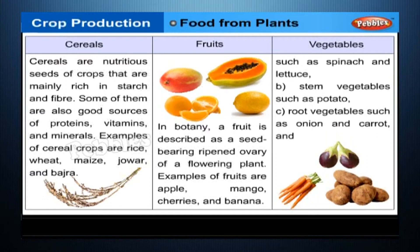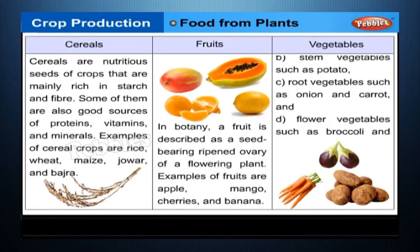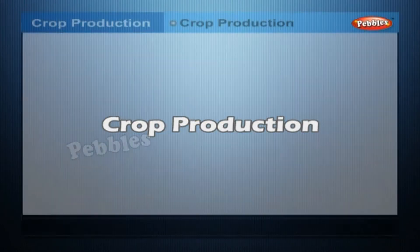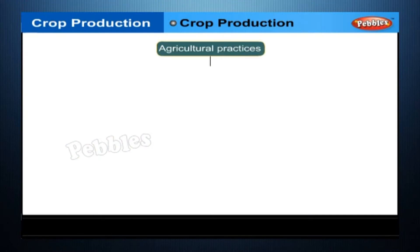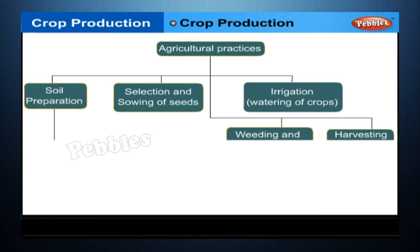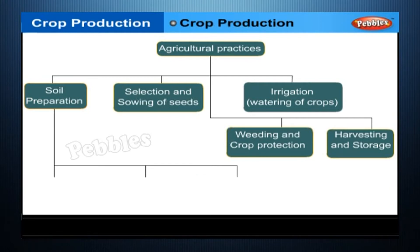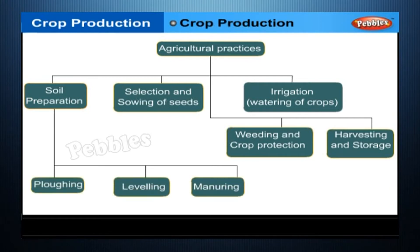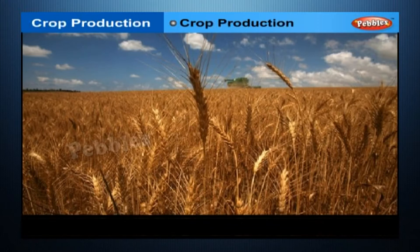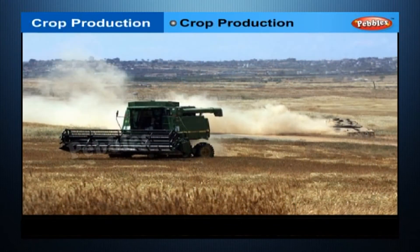Food products obtained from crop plants are listed in the table. To ensure a good crop yield, farmers carry out certain activities in a particular sequence till the crops mature at harvest. These activities are called agricultural practices. A sequential listing of agricultural practices is given in the flow chart shown on your screen. Follow the wheat grains in the figure in their journey from a seed to a big plant and then back to a seed.